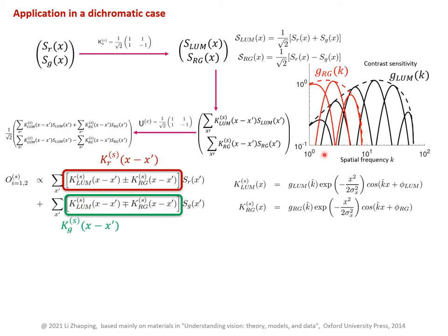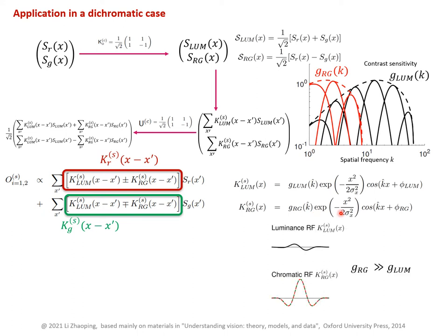First, let's look at the frequency band with the smallest frequencies near zero frequency. The gain for the chromatic channel is much higher than the gain for the luminance channel — notice this is on a log scale, so the chromatic gain is much higher. Applying these two gains to the two Gabor filters: for the luminance filter the phase is, for example, 90 degrees, while for the chromatic filter the phase is, for example, zero degrees. The luminance filter has a smaller amplitude because its gain is much smaller than the chromatic channel gain.